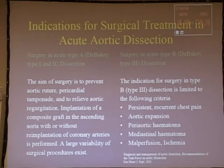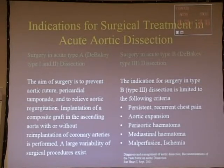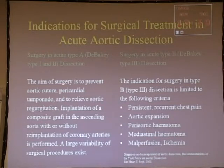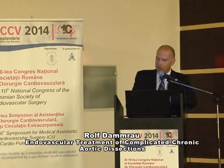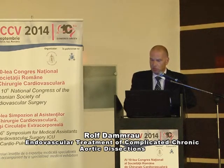In type A dissection, the situation is quite clear: you have to do surgery to prevent aortic rupture or myocardial tamponade. In type B dissection, we have the indication for complicated dissection, which is common with remaining pain, aortic expansion, hematoma, malperfusion, ischemia, and uncontrollable hypertension.